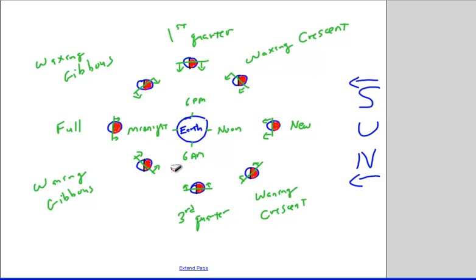The phases of the moon are one of those things you can see very easily — you don't need a telescope or binoculars. You just have to walk out and look at the moon. You can watch it over the course of a month and see this entire set of phases. If you go out and look at the moon each day, you can even see when the moon is rising and see how it changes over just the course of a month.